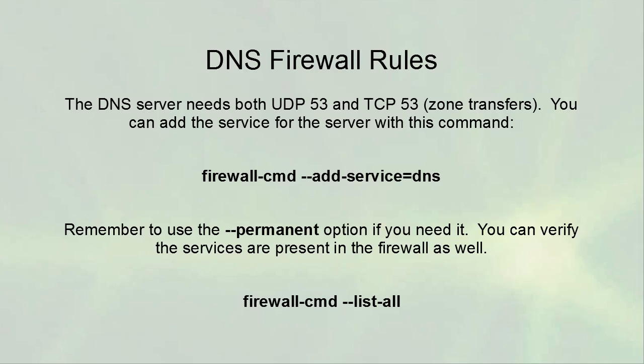To make DNS available through the firewall, you need both UDP and TCP port 53. TCP 53 is needed for zone transfers. You should control who can do zone transfers. To add the DNS service to the firewall, use: 'firewall-cmd --add-service=dns'. To make it permanent, add the '--permanent' option, which writes it to the configuration file. You can verify services in the firewall using 'firewall-cmd --list-all'.